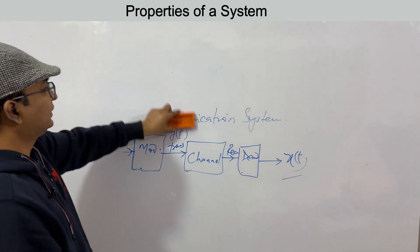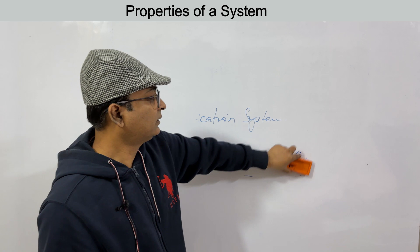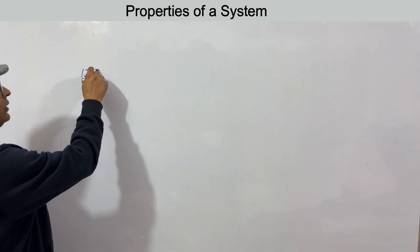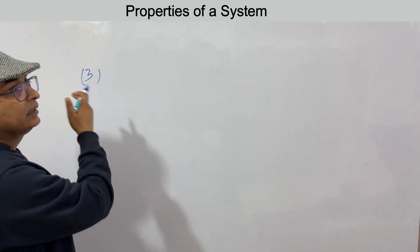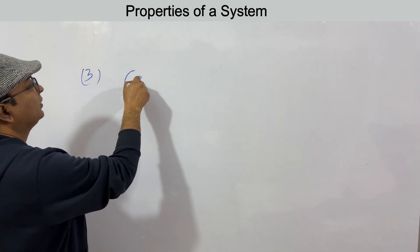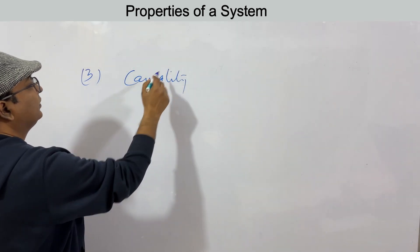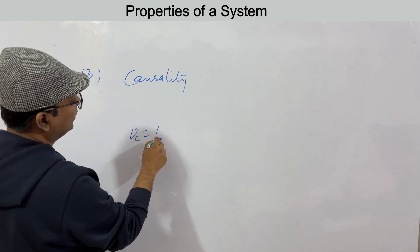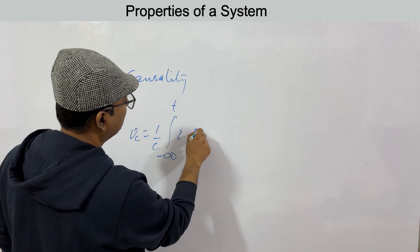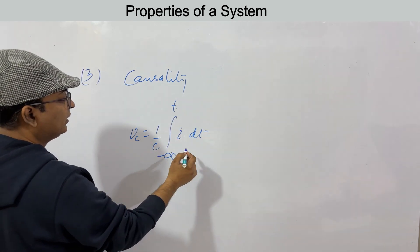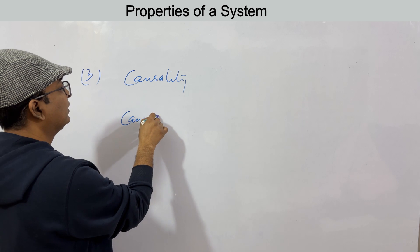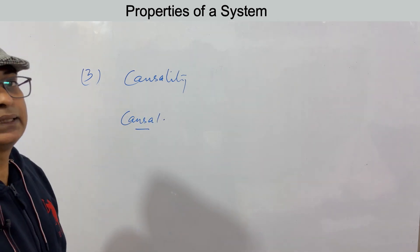The third property is causality. A system is causal when the output signal depends on the present input signal and input signals up to that time — not future values. In the RC example, Vc = (1/C)·∫from −∞ to t of i·dt — it depends on values from minus infinity up to t, so it is causal.